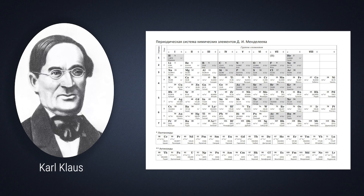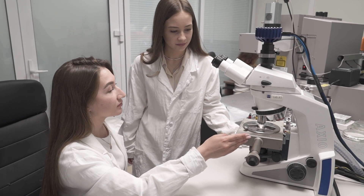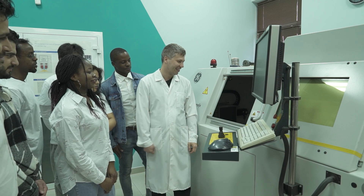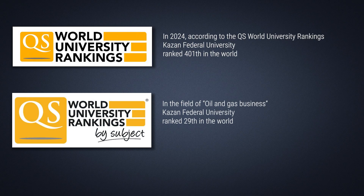The chemical element ruthenium was discovered at Kazan University by Karl Klaus. Nowadays the university is one of the leading in Russia. More than 50,000 students from all over the world study here. In 2024, according to the QS ranking, the university took overall 401st place in the world. In the Petroleum Engineering subject ranking it takes 29th place.